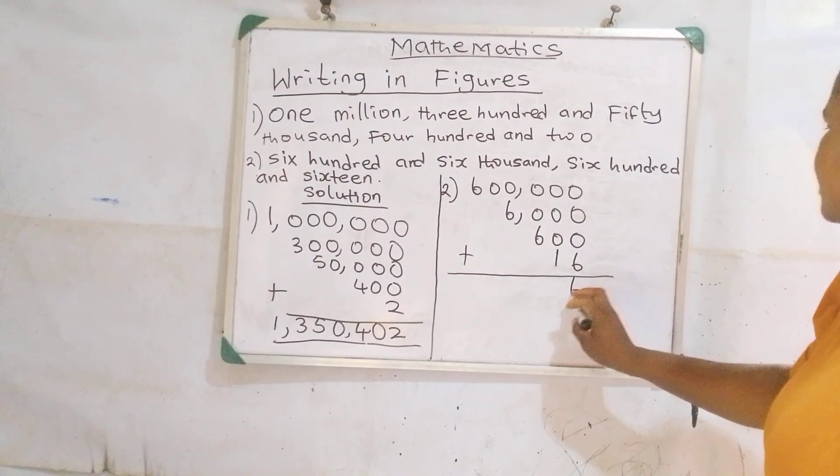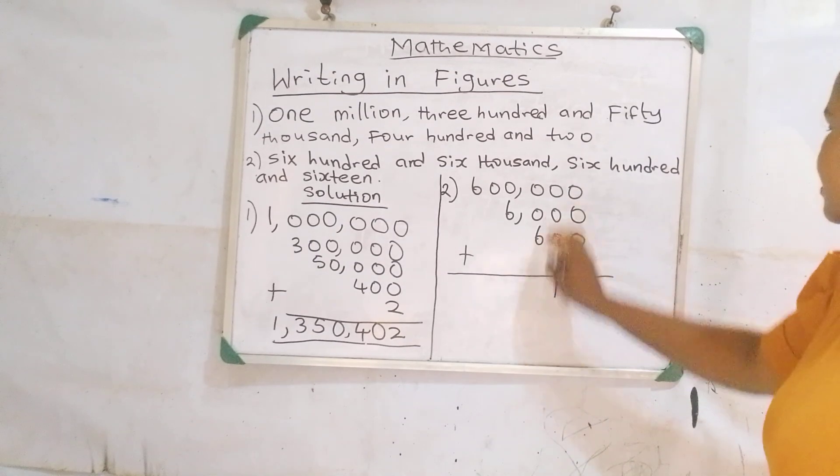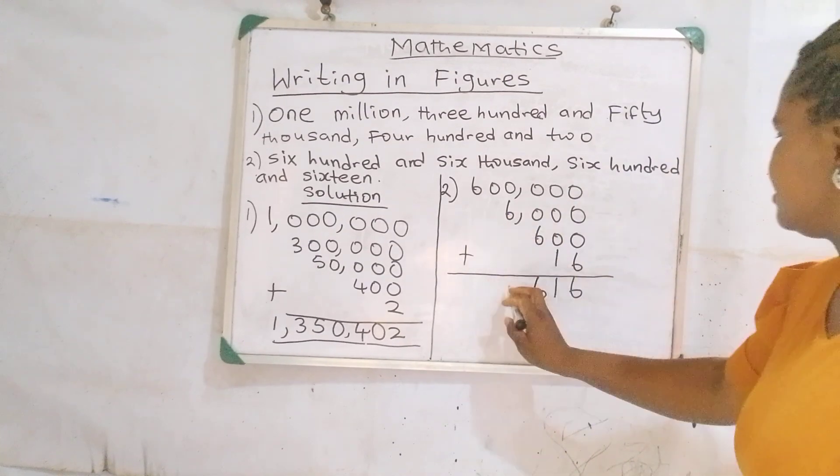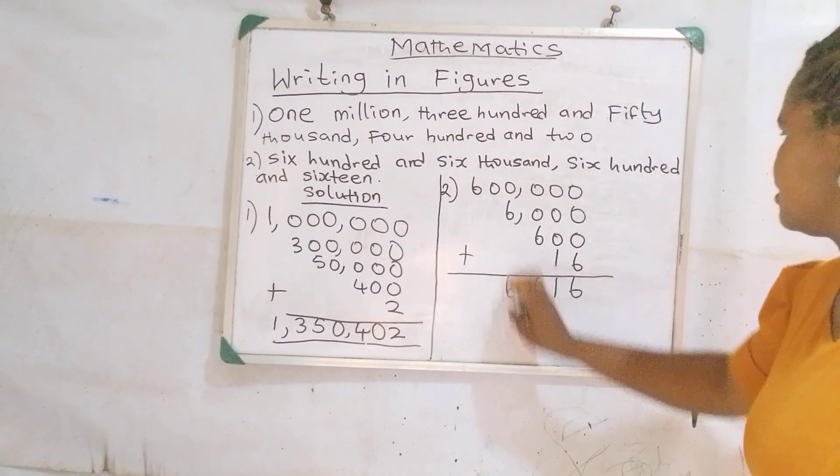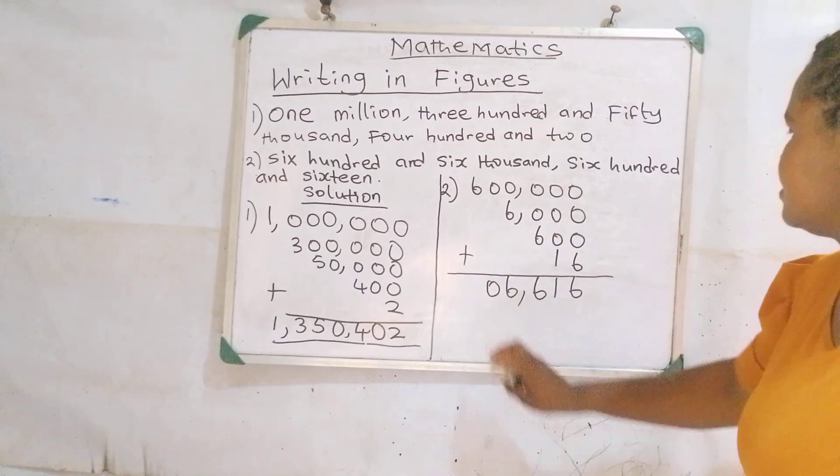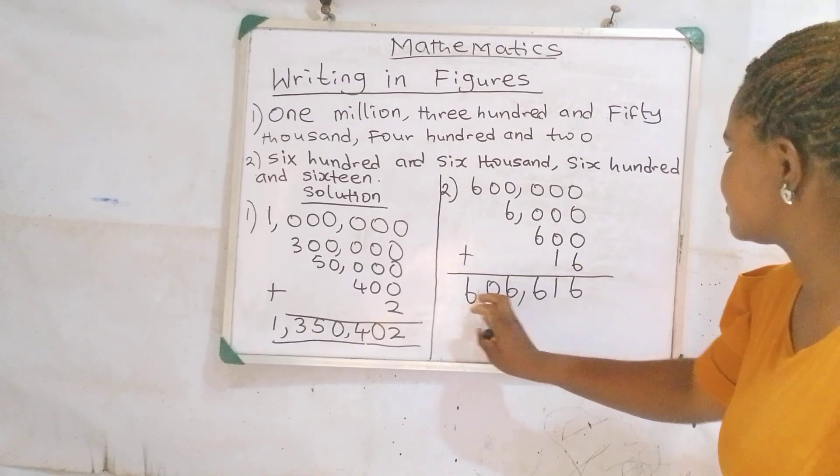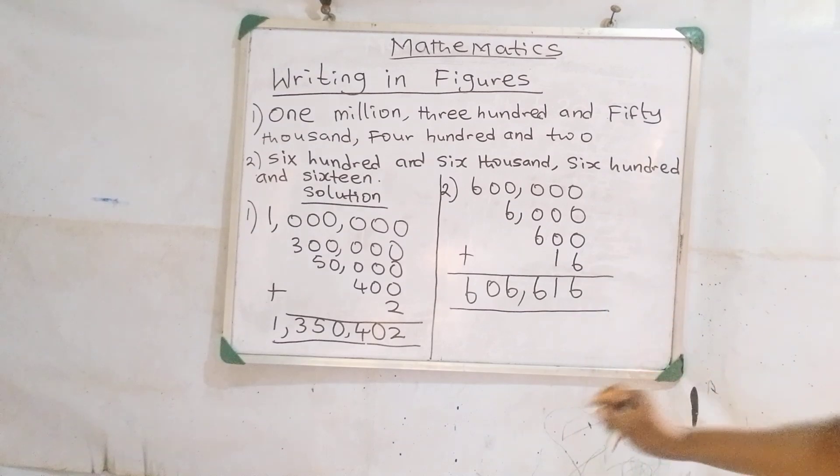If you bring down your 6, you bring down your 1, you bring down your 6, this is 6, 0, and 6. So with this, we have gotten our 606,616.